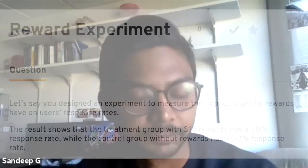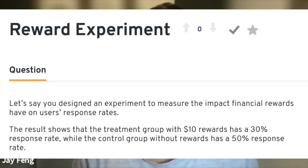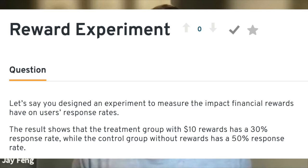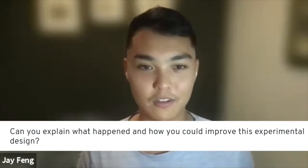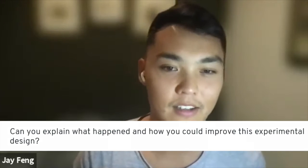This is an A/B testing question. Let's say you design an experiment to measure the impact financial rewards have on user response rates. It's a survey, and the result shows that the treatment group with $10 in rewards has a 30% response rate, while the control group without rewards has a 50% response rate. This is obviously odd. Can you explain what might have happened and how you can improve this experimental design?